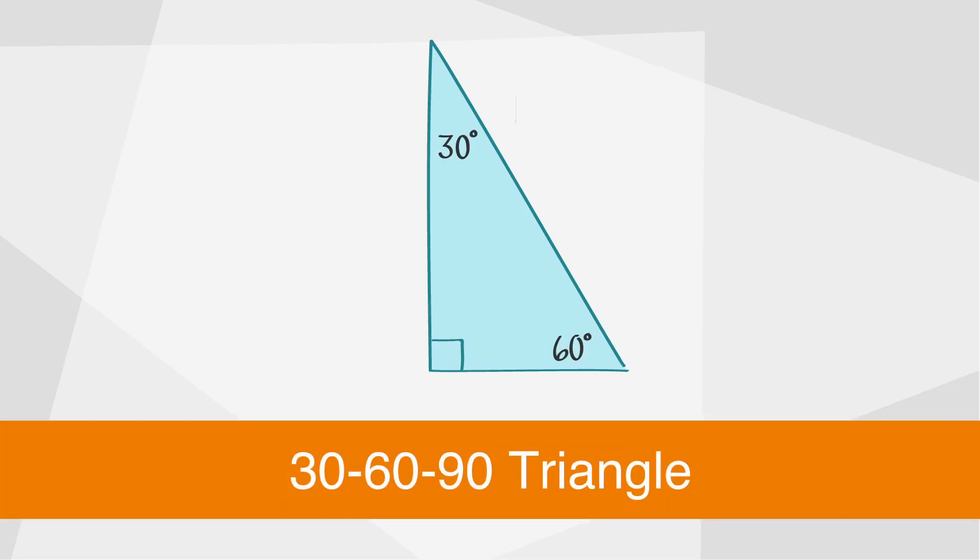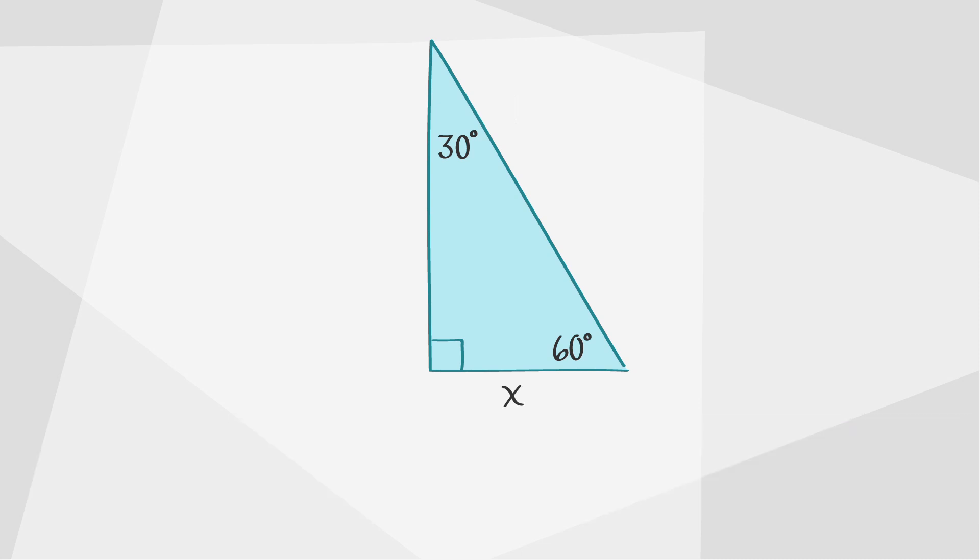Now let's talk about the 30-60-90 triangle. In a 30-60-90 triangle, the side length opposite the 30-degree angle is x. The side length opposite the 60-degree angle is x times the square root of 3. The length of the hypotenuse that's opposite the 90-degree angle is 2 times x.